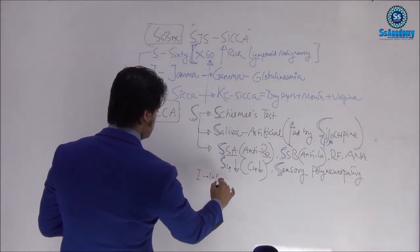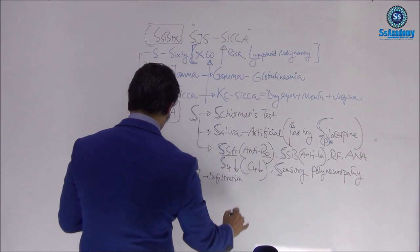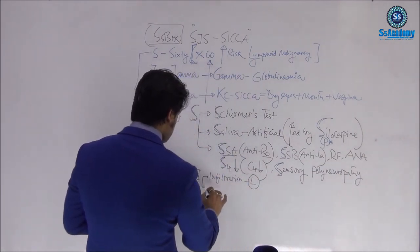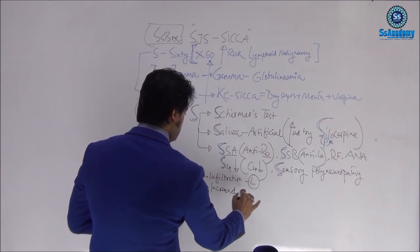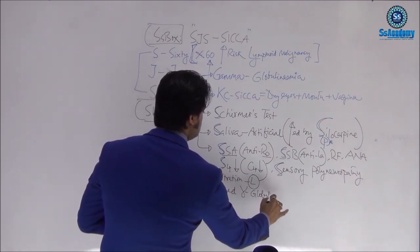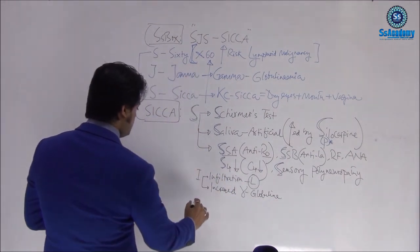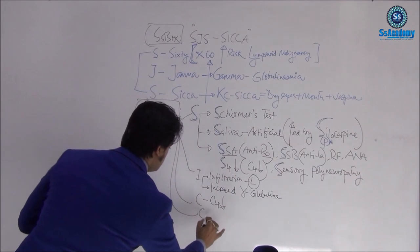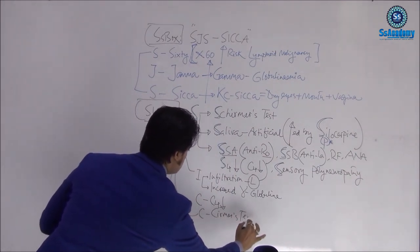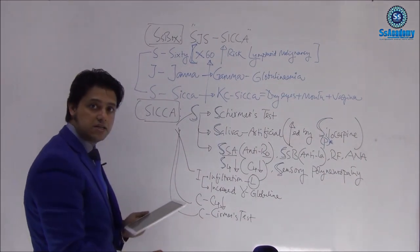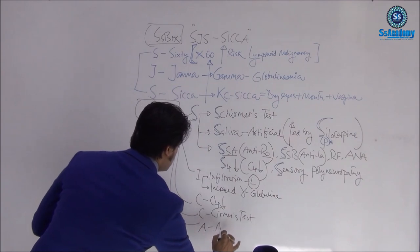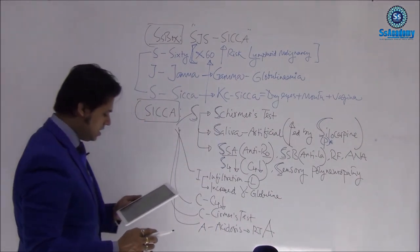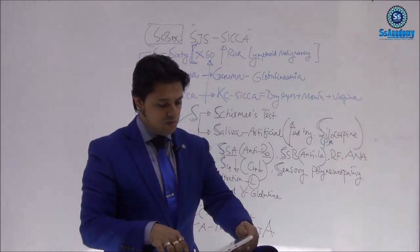I stands for infiltration — specifically focal lymphocyte infiltration. C stands for C4 reduced, and the Schirmer's test is noted again here as a very hot exam topic.